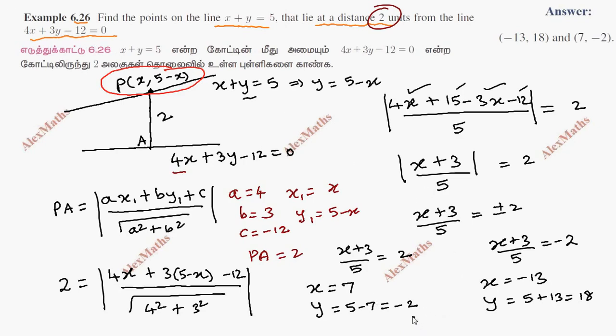7, minus 2 is one point. This is x, y: minus 13, 18. So minus 13, 18 is one point. So find a point on the line, the point P which is lying on the line x plus y equals 5. Minus 13, 18, one point. This is 7, minus 2.